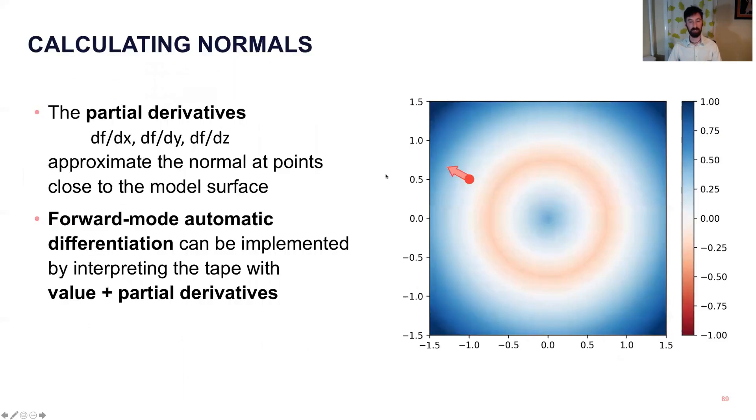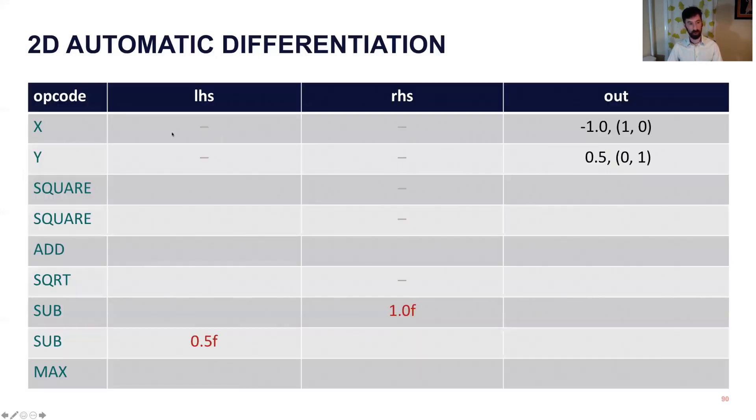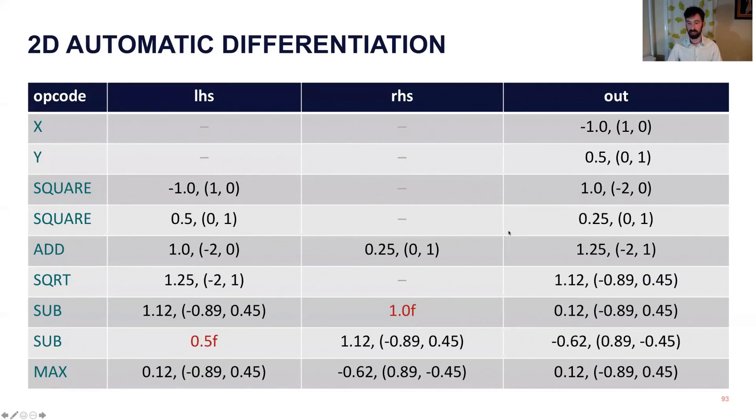We also want normals and shading, and it turns out there's a very cool trick, where near the surface of the model, the partial derivatives of your equation are going to be approximately the normals of the model at that point. So we can borrow a technique from the machine learning folks over in the other track, and use forward mode automatic differentiation, which is a way of evaluating the tape and tracking both the value and the partial derivatives. And so we're back to our tape, we have another flavor of interpreter, where we have the value at a given point, and then the partial derivatives with respect to x and y. We apply the chain rule to keep these updated as we go through all the different operations, and we end up with both the value and the direction that it's pointing, which is the normal in 3D.